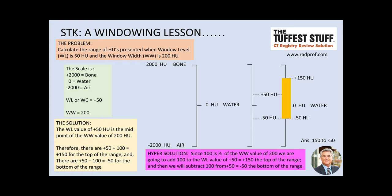And then when we subtract 100 units from plus 50, we get minus 50 Hounsfield units representing the bottom of the range. That means the answer to our problem is 150 to minus 50, as far as the range of Hounsfield units represented.